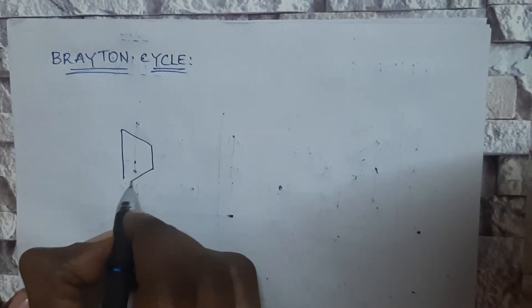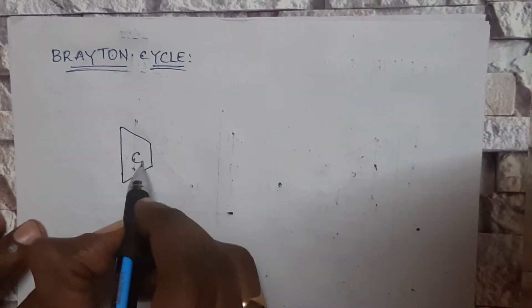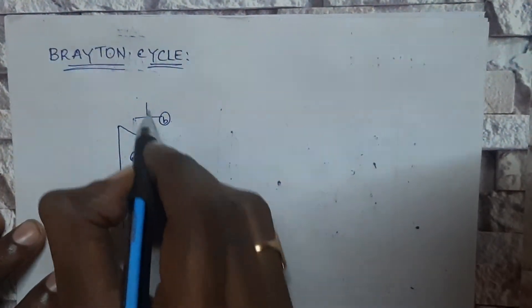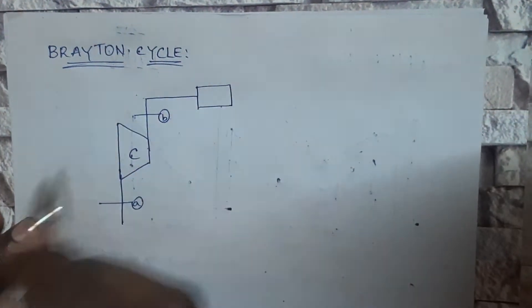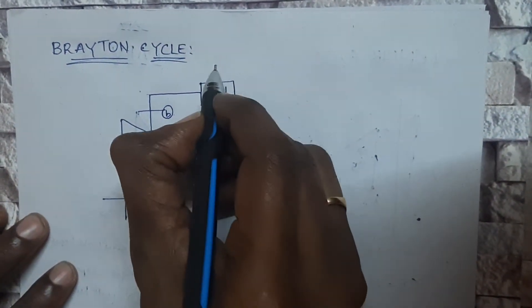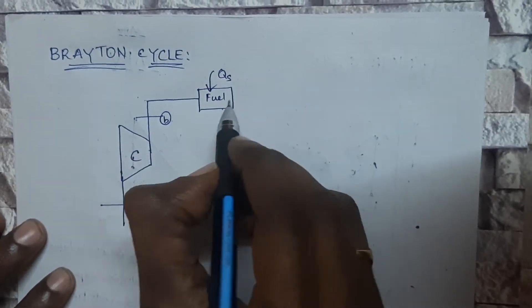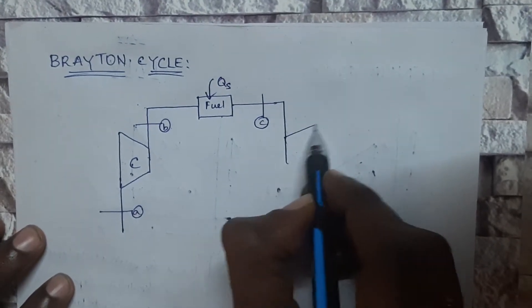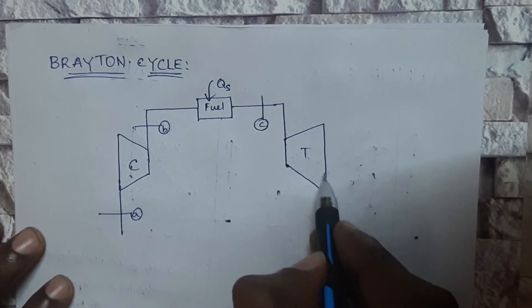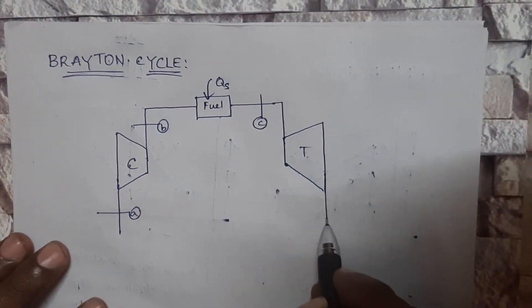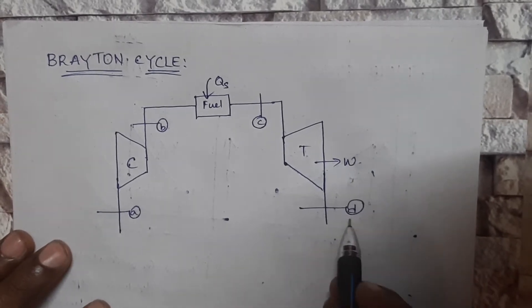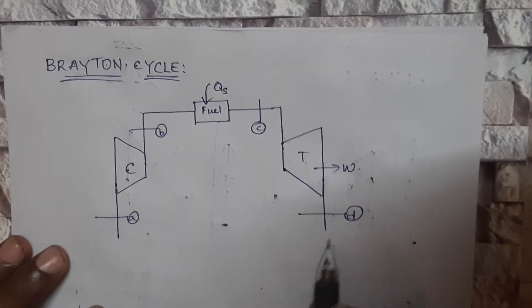In the compressor, the fuel is compressed and the volume of the fuel is reduced. From section A to section B, the air goes with high pressure into the fuel chamber where combustion occurs — heat is added, causing steam to be generated. That steam strikes the turbine blades, causing them to rotate, and the work output is obtained. Finally, the combustion exhaust exits externally.